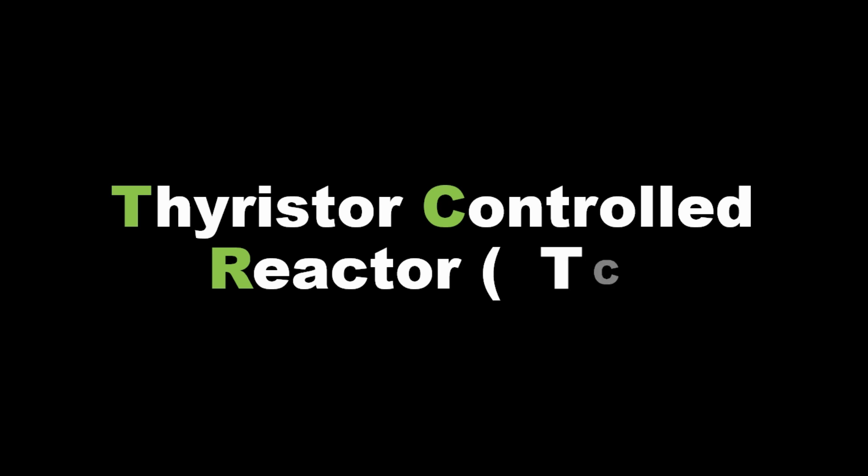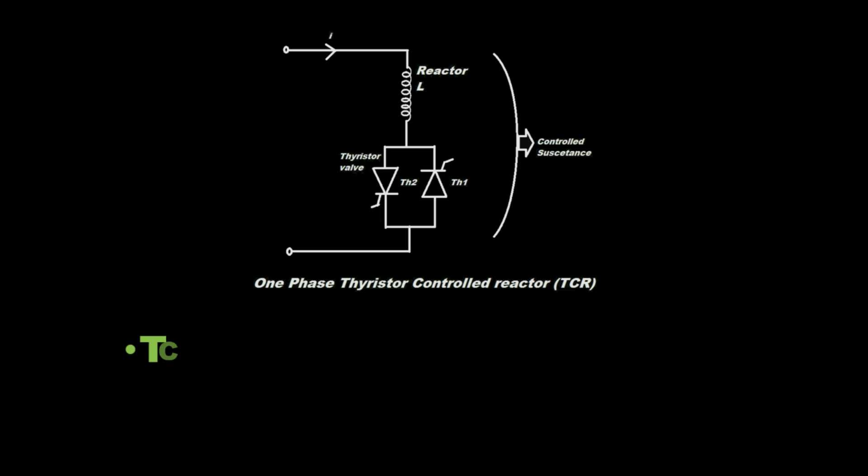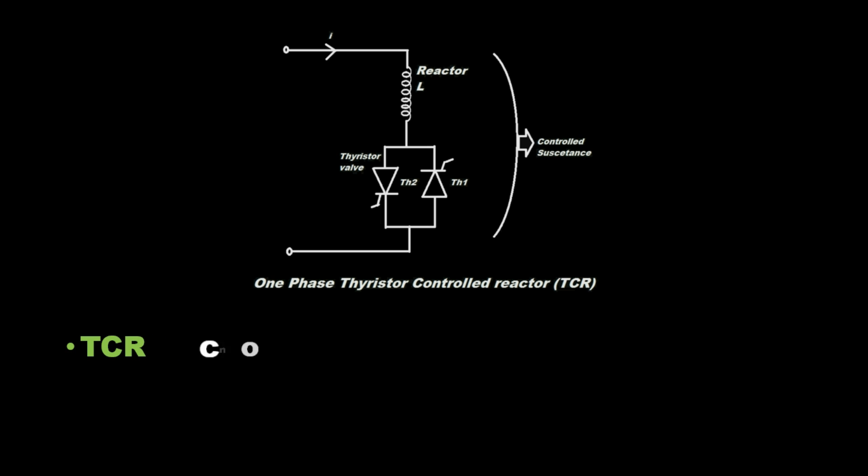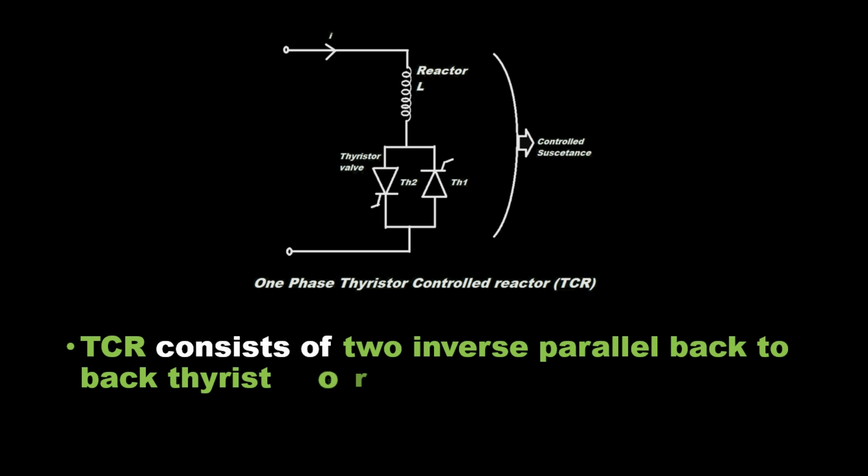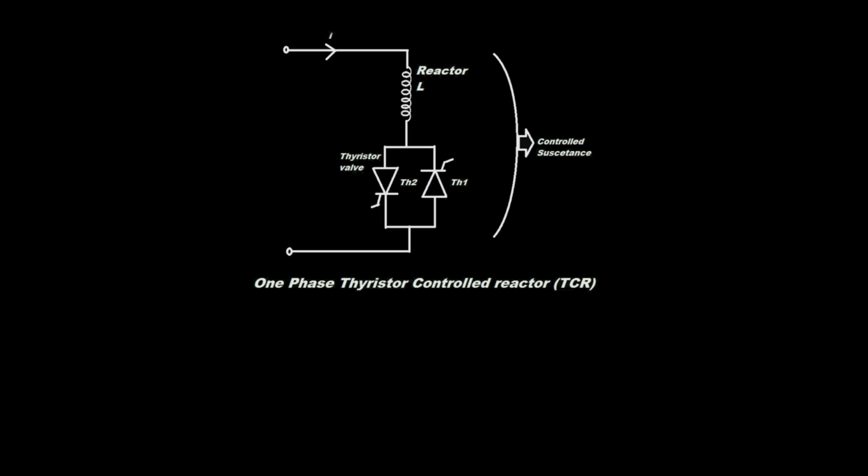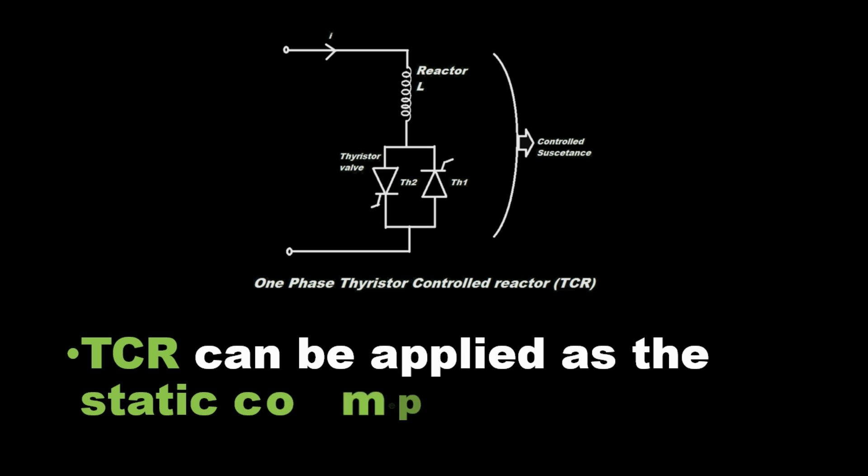Thyristor Controlled Reactor (TCR) is a type of SVC and it is more flexible and requires small rating of reactor. TCR consists of two inverse parallel back-to-back thyristors and they conduct on alternate half cycles of frequency. TCR can be applied as a static compensator.